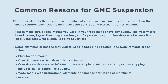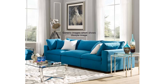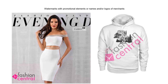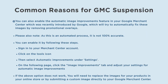Scenario 9: Google Merchant Center is suspended due to inappropriate images. If Google detects that a significant number of your items have images violating the image requirements, it might suspend your account. Please make sure all images in your feed do not have any overlay such as watermarks, brand names, or logos. Examples of violating images include: placeholder images, generic images, lifestyle images, images containing service-related information like extended warranty or free shipping, images with calls to action like Buy Now, watermarks with promotional elements, merchant names or logos, and borders. You can enable the automatic image improvements feature in Google Merchant Center to automatically remove promotional overlays.